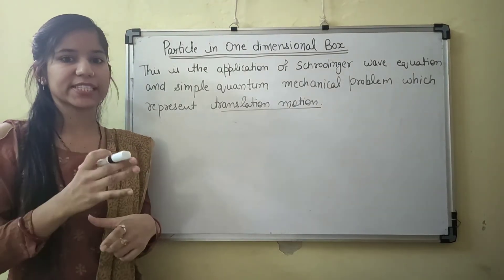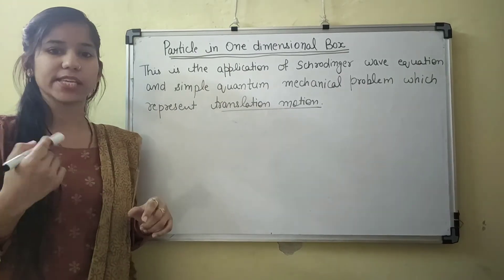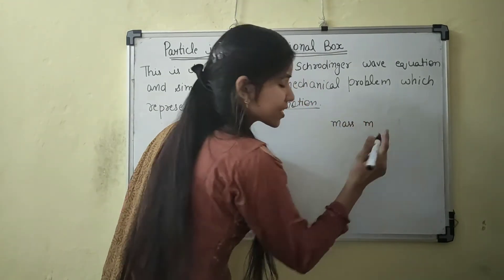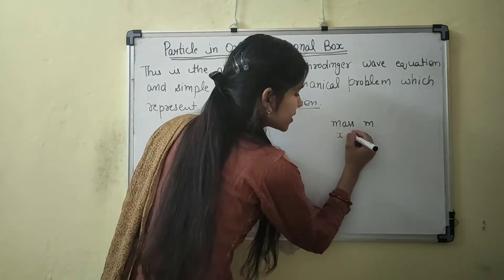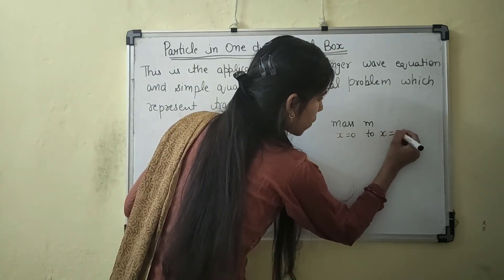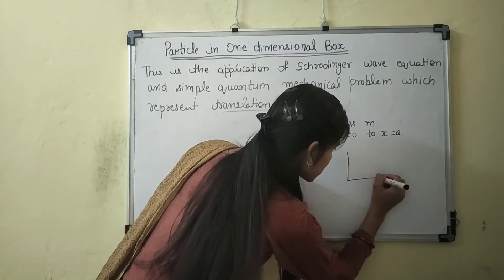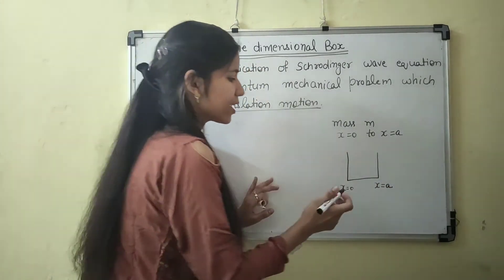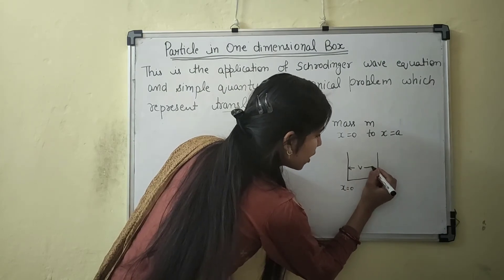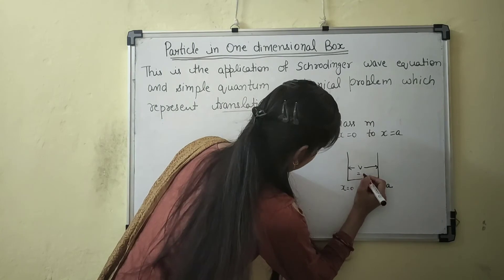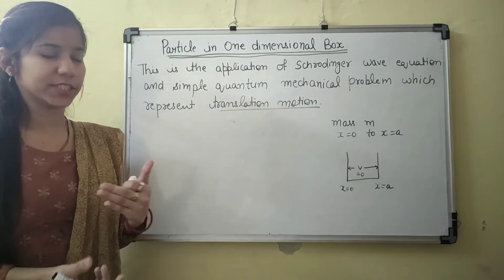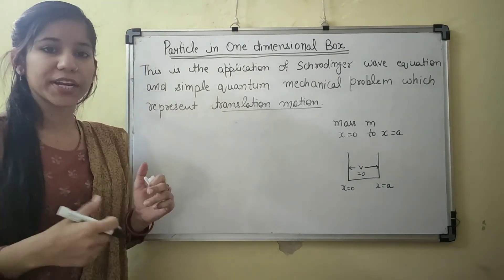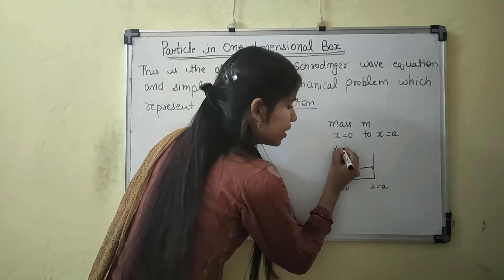A hypothetical case can be considered in which a single particle — for example a gas molecule which has mass M — is restricted to move in a region X = 0 to X = A. Inside the box, potential energy is constant or taken as 0. For the particle to not go outside the box, the potential energy should be infinite at the walls of the box.